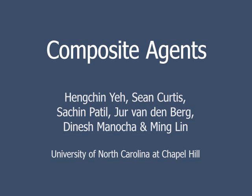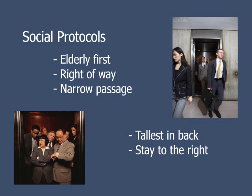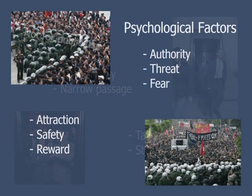To improve crowd simulation beyond basic motion planning, we must include social and psychological factors. For example, allowing people to exit an elevator before others enter is a social protocol. Alternatively, the psychological perception of authority allows a small group of police to control a large disorderly crowd. We propose a method for introducing phenomena such as these and more into crowd simulation.